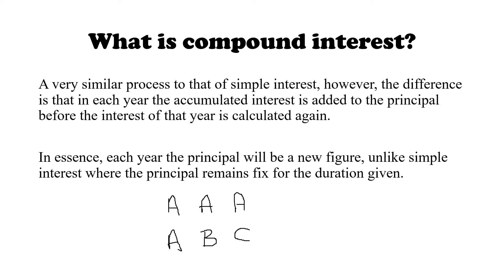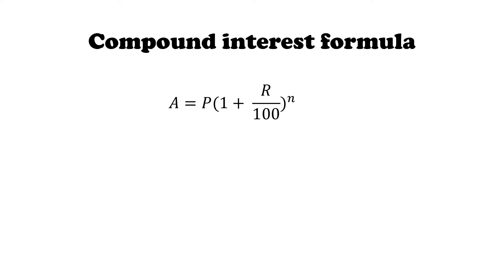That is basically what we need to understand about compound interest. The only difference, besides the formula being different, is that you do not have the same principal throughout the period of interest — the principal will change for each given year. So to re-read the definition: it's a very similar process to that of simple interest. However, each year the accumulated interest is added to the principal before the interest for that year is calculated again. Therefore each year the principal will be a new figure, unlike simple interest where the principal remains fixed or constant for the duration of the interest period.